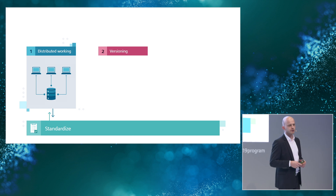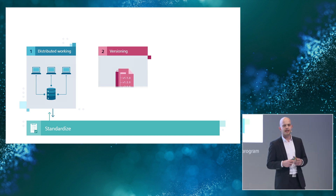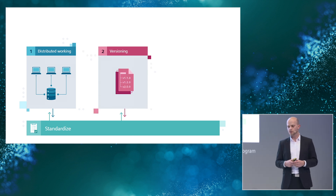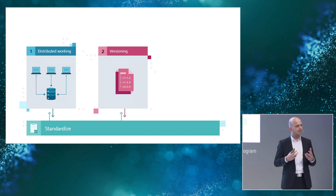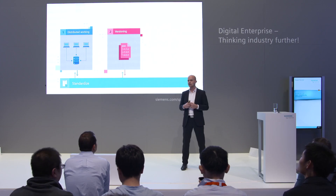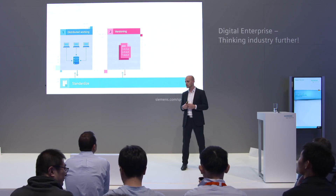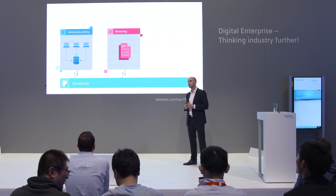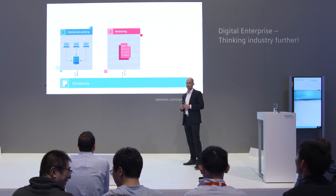Traceability of changes — that's exactly what versioning is about. It's like a parachute for every development process, which would otherwise be in free fall.